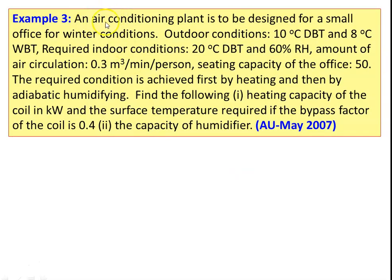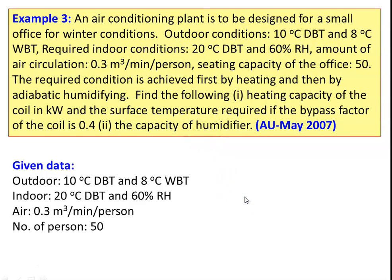Example 3: An air conditioning plant is designed for a small office under winter conditions. Outdoor conditions: 10°C dry bulb temperature and 8°C wet bulb temperature. Required indoor conditions: 20°C dry bulb temperature and 60% relative humidity. Air circulation is 0.3 m³/min per person. The office capacity is 50 persons. The required conditions are achieved by heating and then an adiabatic humidifier. Find: heating capacity of the coil in kW, surface temperature if bypass factor is 0.4, and capacity of the humidifier.